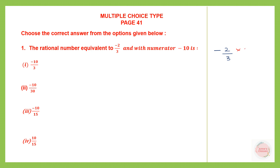So if we multiply 2 into 5, we get minus 10. But when we multiply the numerator by 5, we should multiply the denominator also by 5. So here we get 3 fives are 15. So minus 10 by 15 is the rational number that is equivalent to minus 2 by 3 with numerator minus 10. Minus 10 by 15 is option 3. So this is our answer.